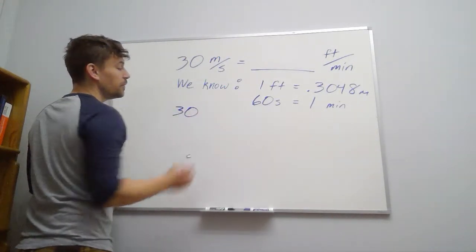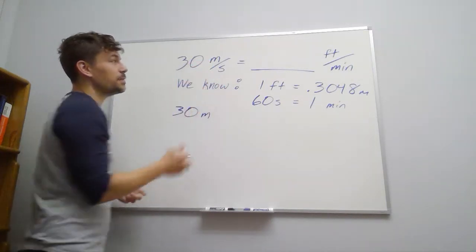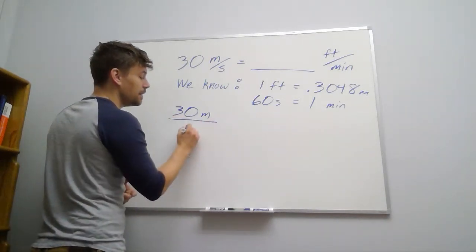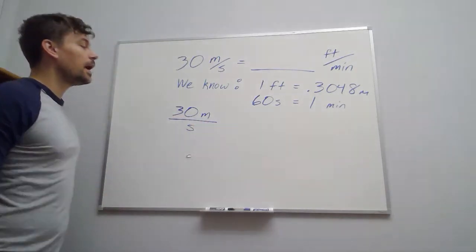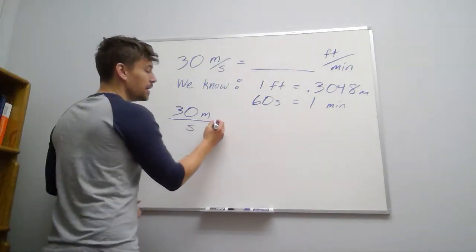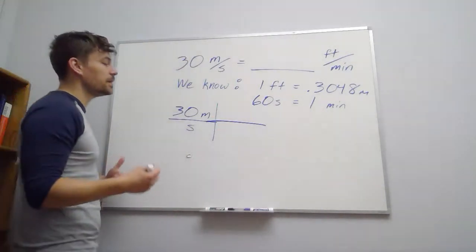So if we put our 30, and notice the units, meters is on top, seconds is on the bottom. So I'm actually going to write it exactly like that, meters per second. And you can just use fractions throughout, but I'm actually going to split this up in a way that's more common in chemistry.